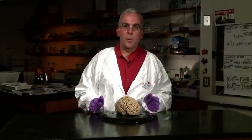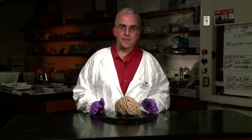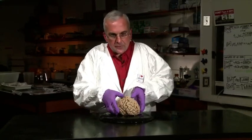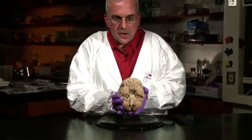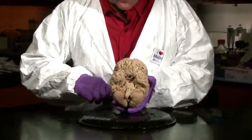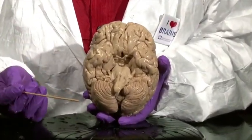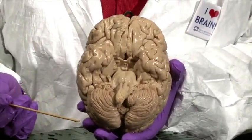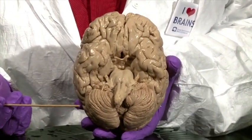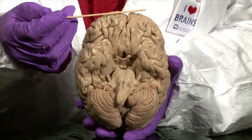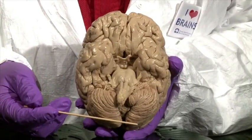For this lab lesson, we want to explore the ventral surface of the human brain. I'm going to take this specimen and hold it up so that you can have a clearer view of the ventral surface of the brain. I'd like to walk you through the features of this brain surface from the front, the anterior part of the brain, through the back, the posterior part.